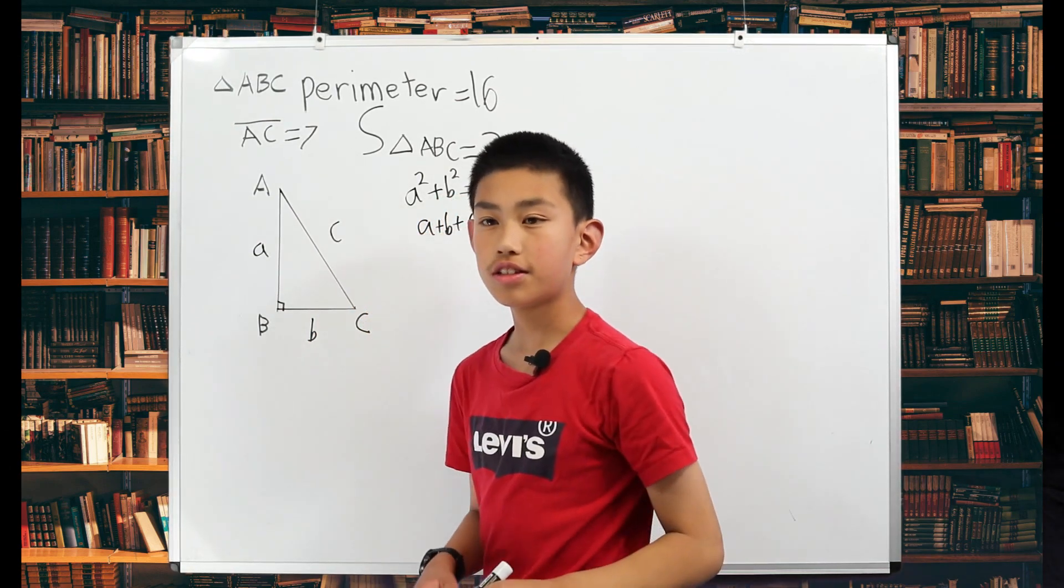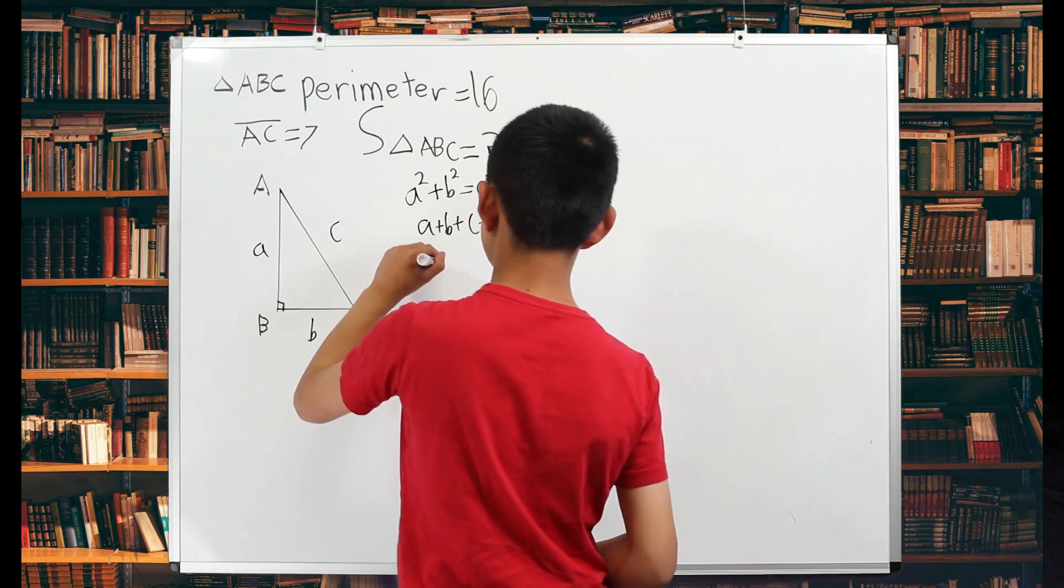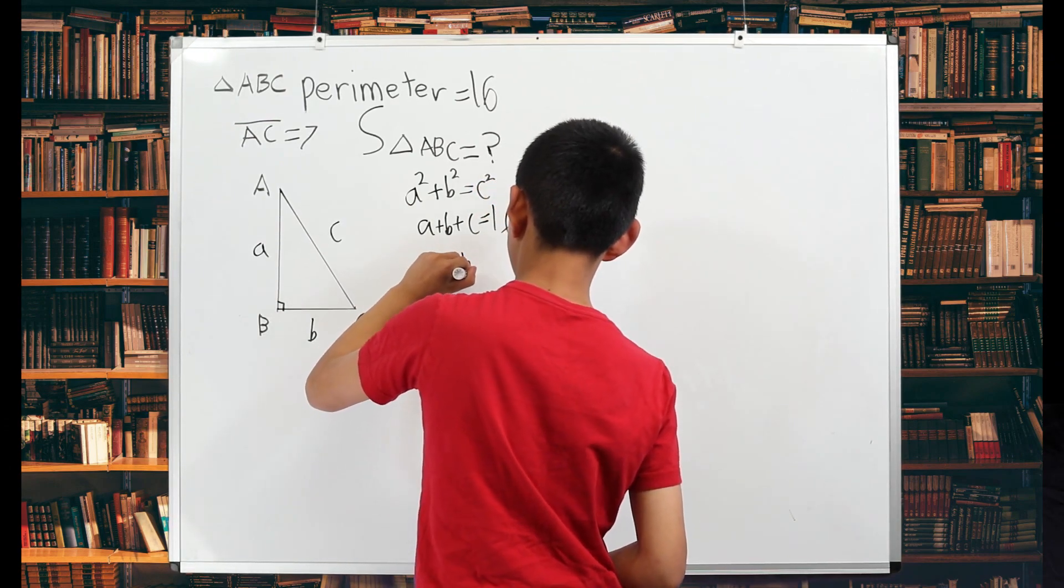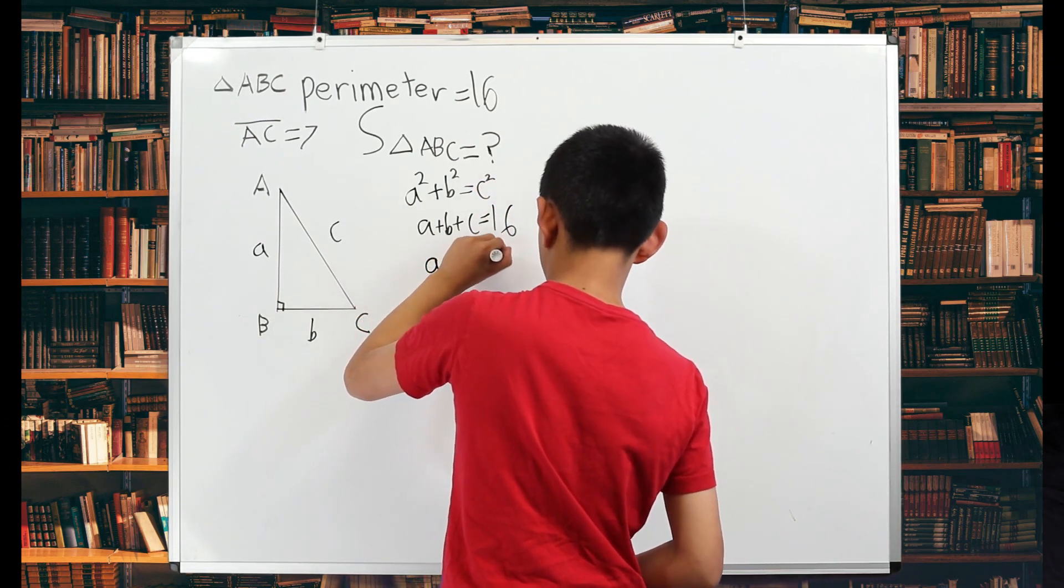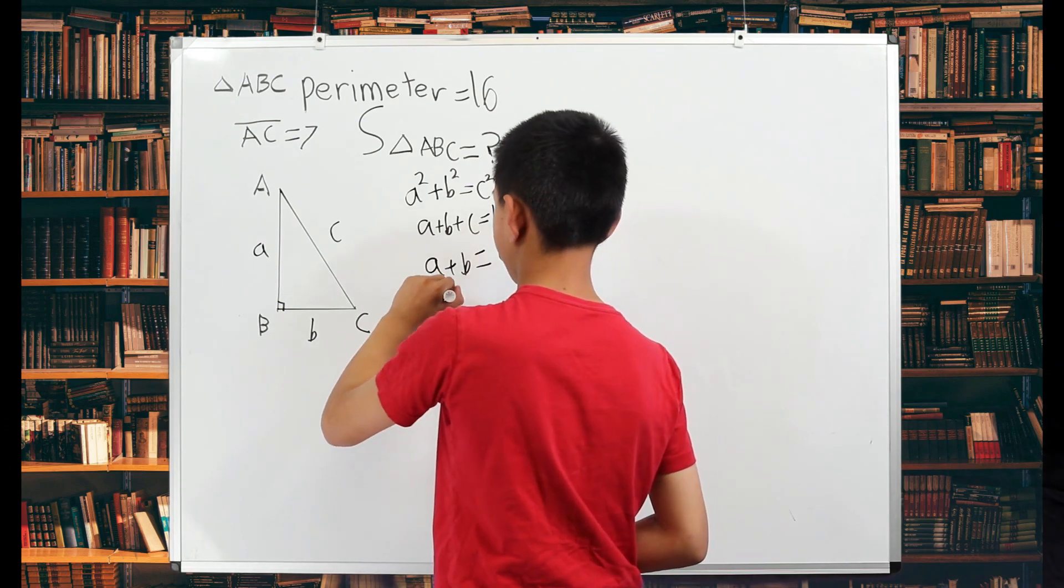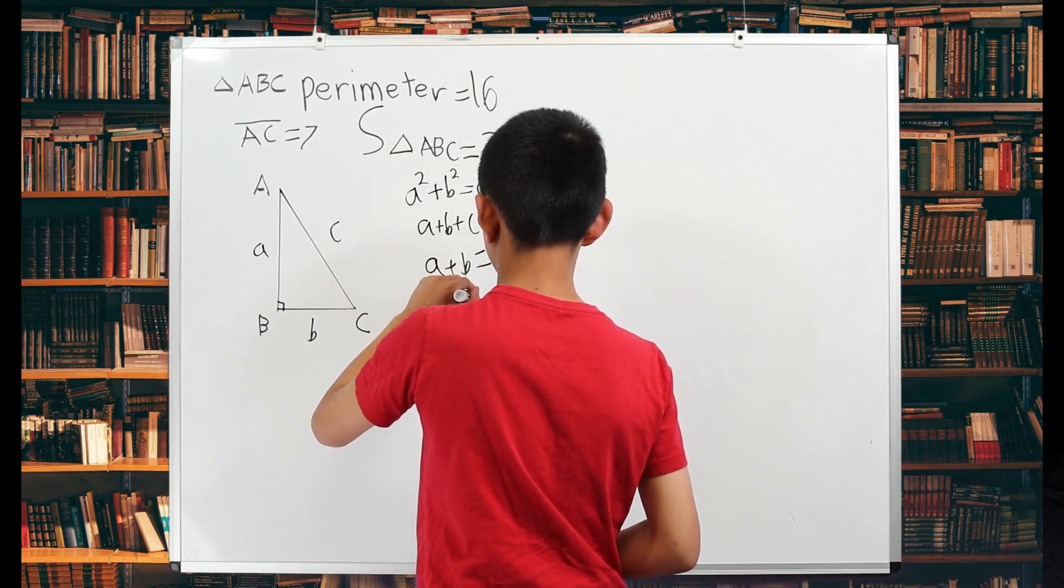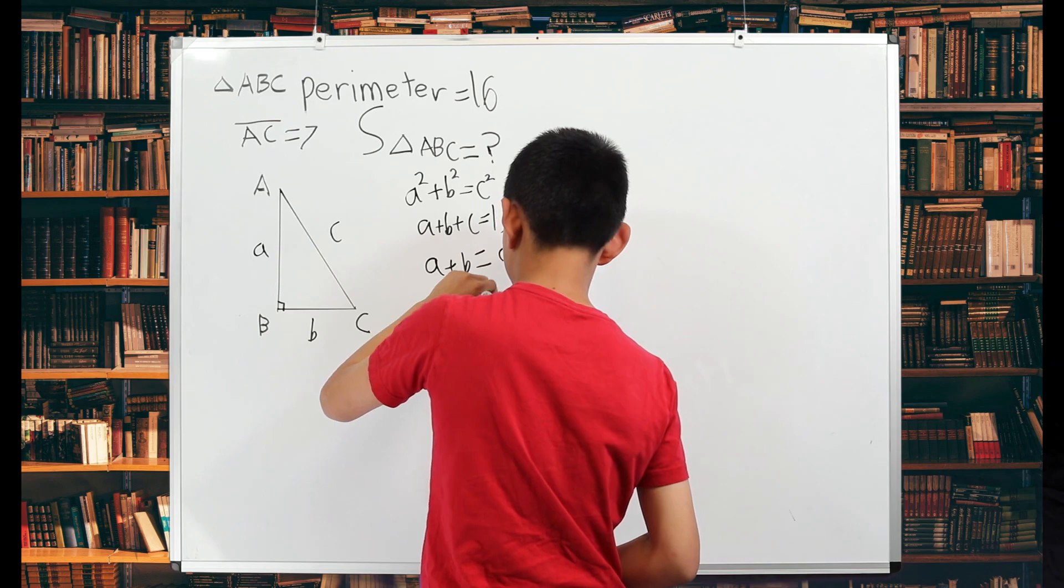And since C is 7, that means A plus B is equal to 9. Therefore A is equal to 9 minus B.